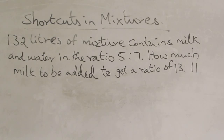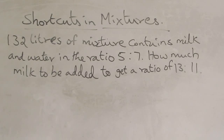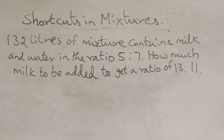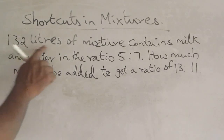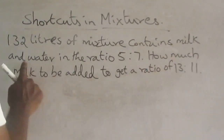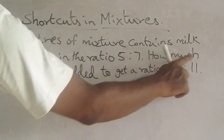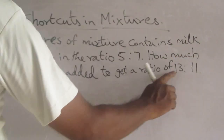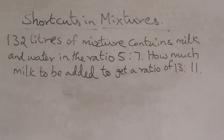This is one of the shortcuts in mixtures. 132 liters of mixture contains milk and water in the ratio of 5 is to 7. How much milk should be added to get a ratio of 13 is to 11?